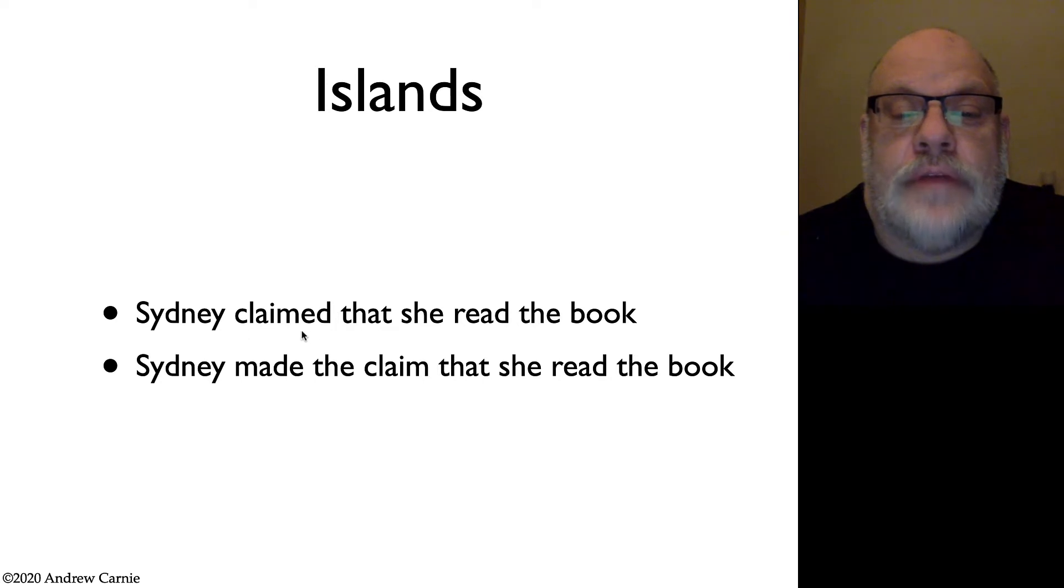Now in the first sentence, we have the verb claim, and in the second sentence, we have the verb made, and we have a noun phrase, the claim, that has a relative clause on it that modifies it. Just looking at these two sentences, there isn't much difference. But once we start doing WH movement, things get very interesting.